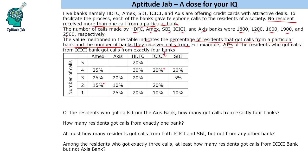That means MX plus one more bank, or ICICI plus three more banks. Based on this information we need to answer the questions. Let us first write the values: HDFC is 1800, MX is 1200, SBI is 1600, ICICI is 1900, and X's bank is 2500.